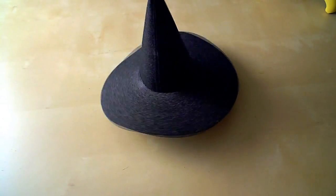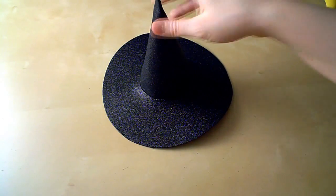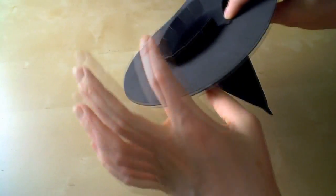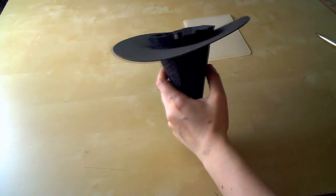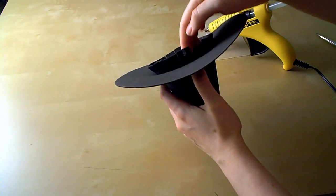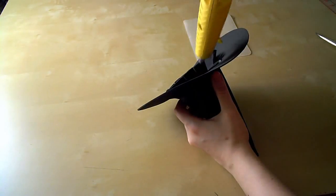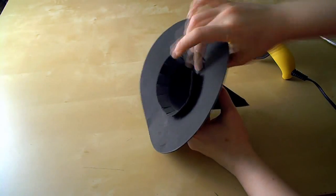When we made all those little clips in the cone, we basically made a bunch of little flaps that we can now fold down and glue to the brim, which will keep everything together. So make your way around the hat, gluing those little flaps down one or two at a time, and then make sure you hold them in place long enough for the glue to set.